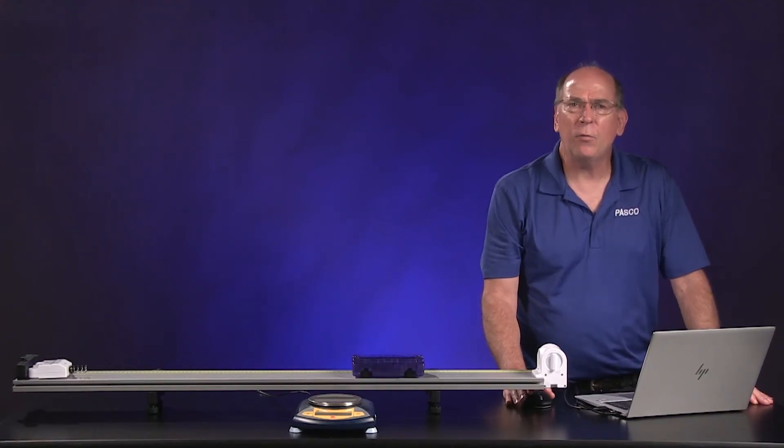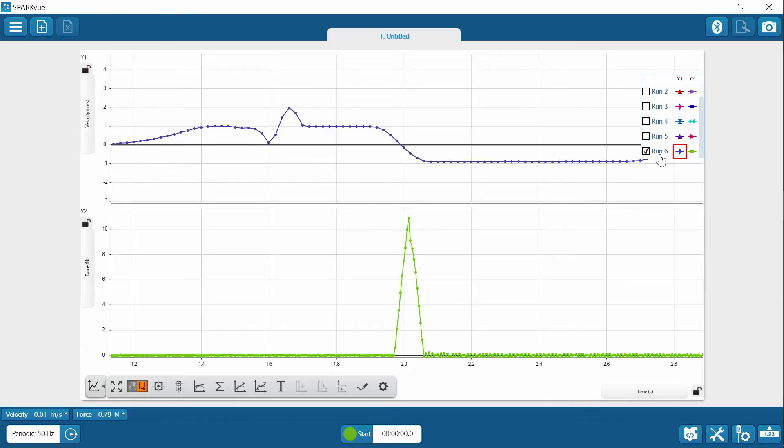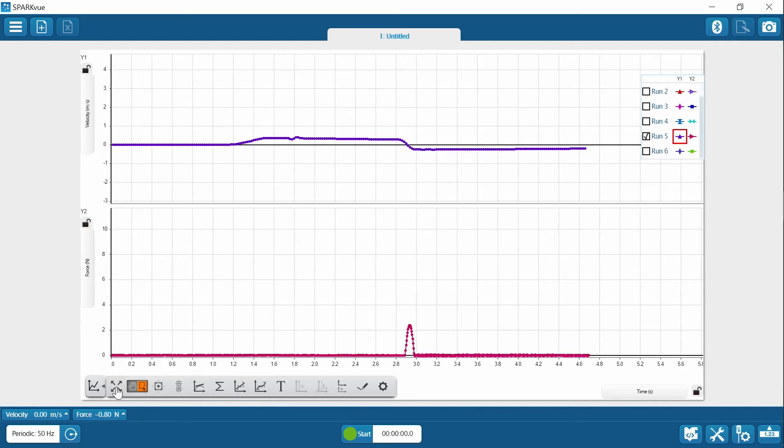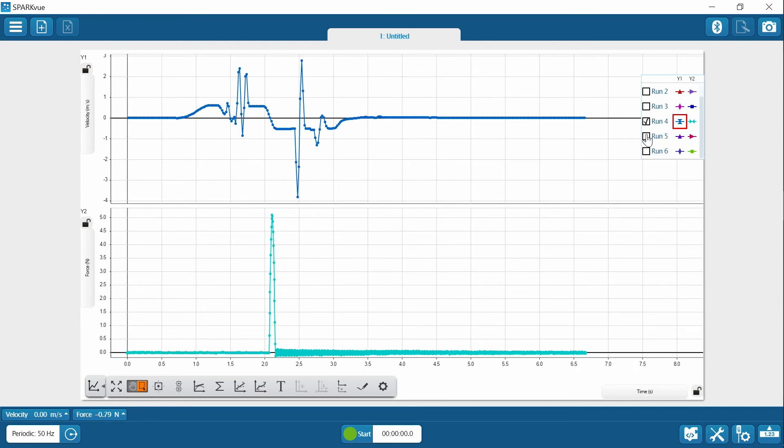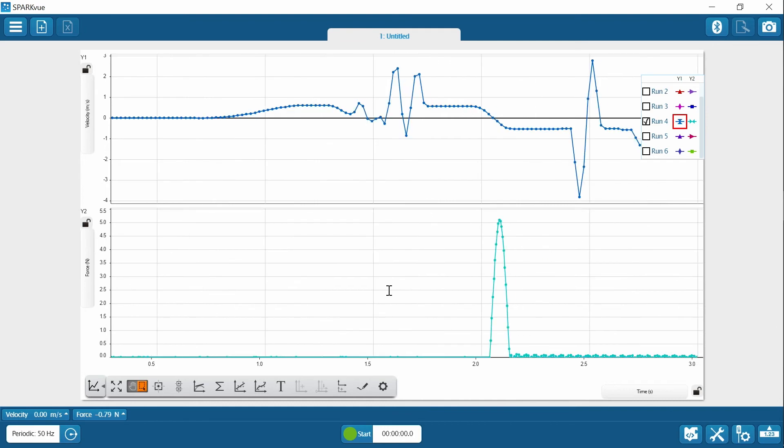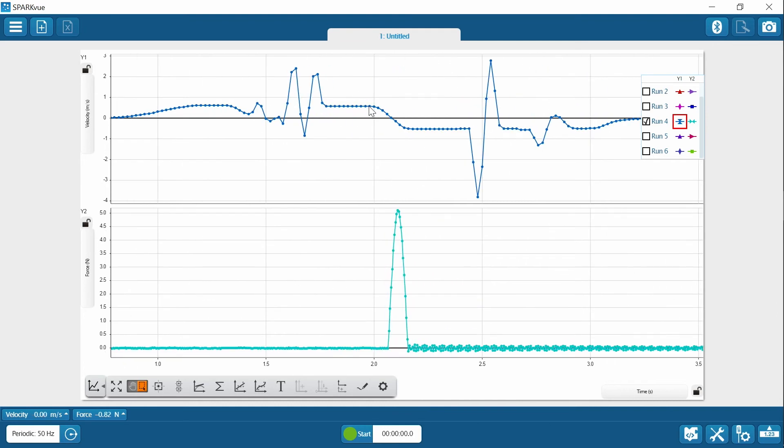So let's check out our data. We have six collisions to analyze. So here's the last one, run six. You can see where the collision occurred from the force graph and you can see the velocity changing from positive to negative, but their magnitudes are very similar. So that's what I'm looking for, for a good run. And run five, expand that. That looks pretty good. That was a really fast one. And run four, sometimes it helps to zoom in on just the collision part so you can see what's going on. That looks pretty good.